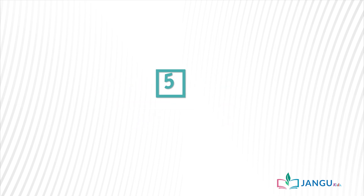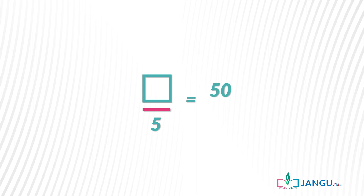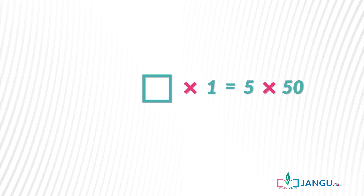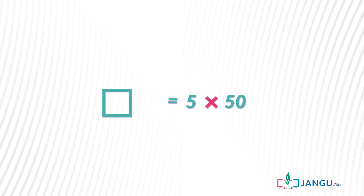An unknown value divided by 5 equals 50. Here we do what is called cross multiplication. Our unknown value times 1 equals 5 times 50. 5 times 50 is 250. Therefore the unknown value is 250.